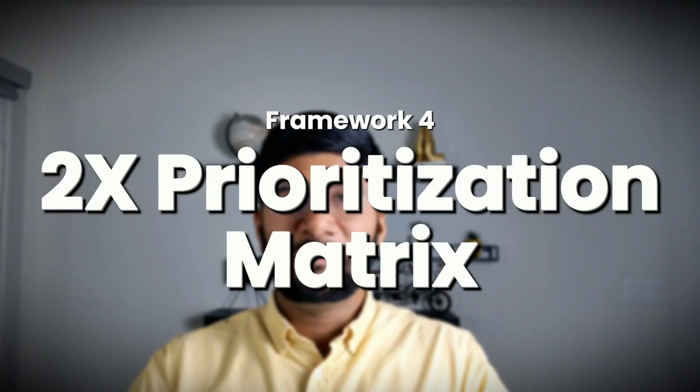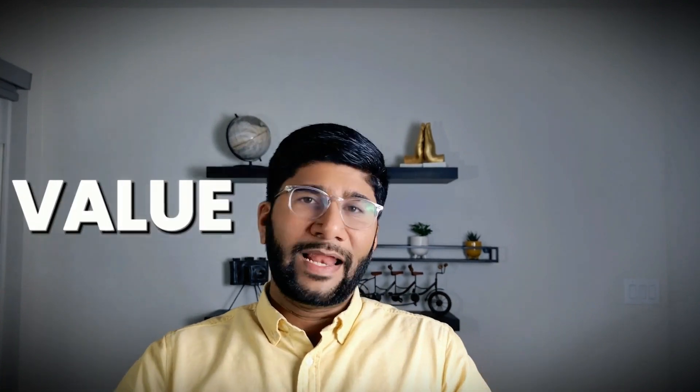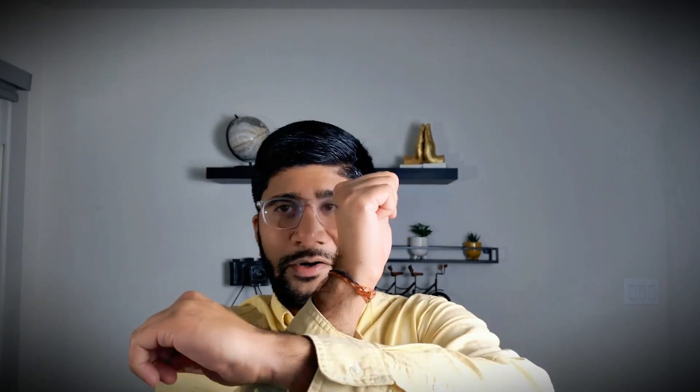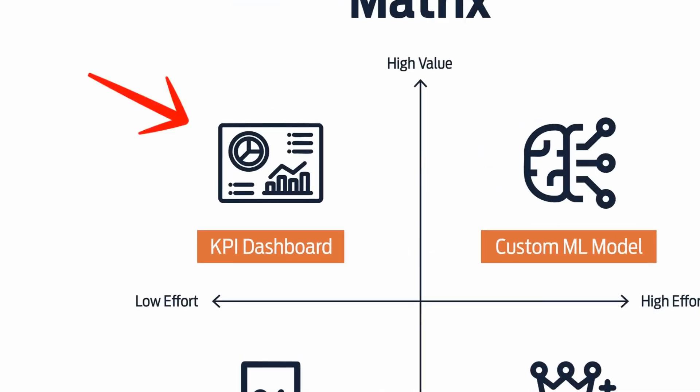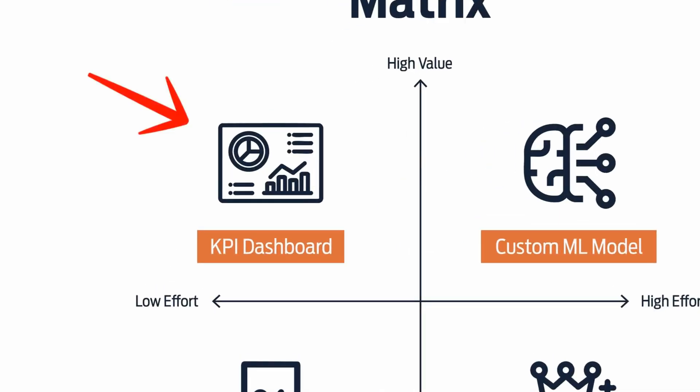The fourth framework is called the Two-by-Two Prioritization Matrix. Not every analysis deserves your time. The two-by-two matrix gives you the permission to focus — you plot by value versus effort. It has four quadrants. The first is high value, low effort: it requires less effort but delivers a high return on investment — these are your quick wins.